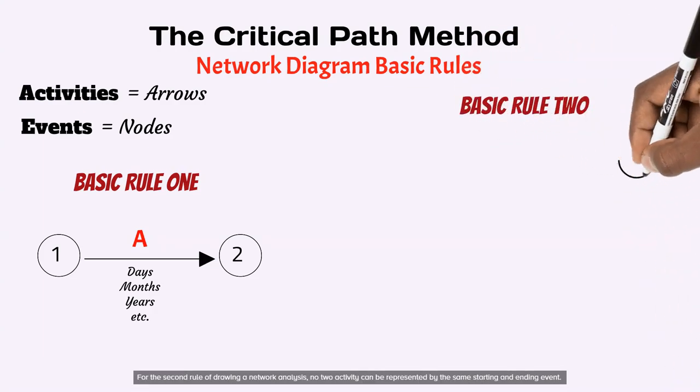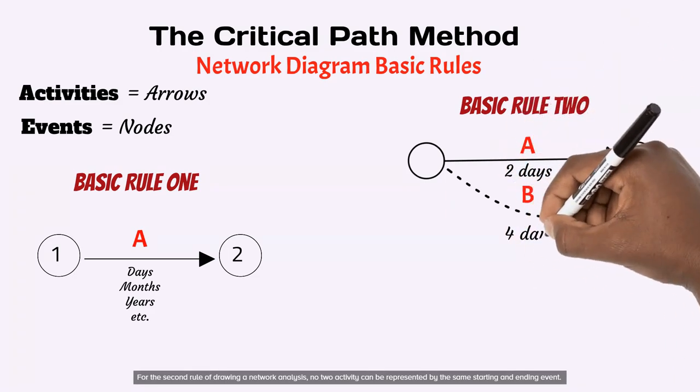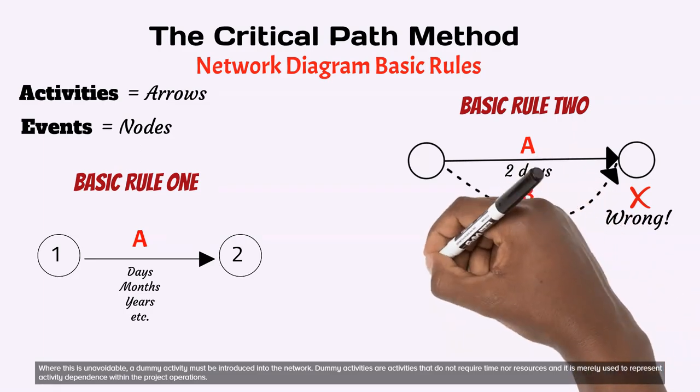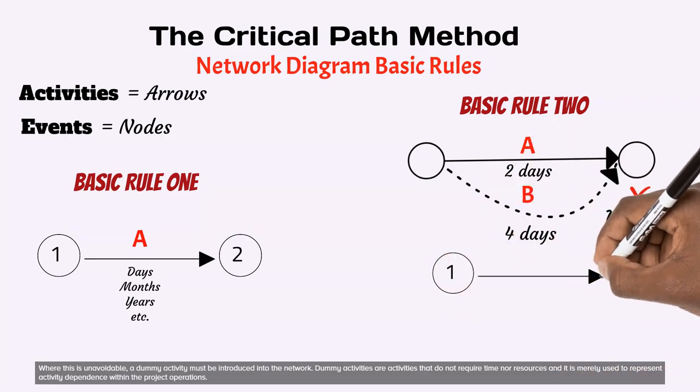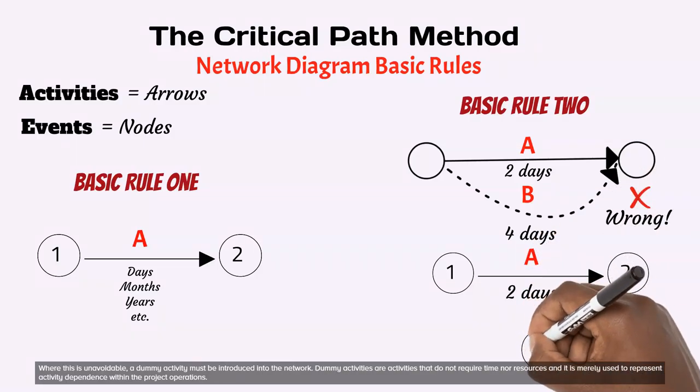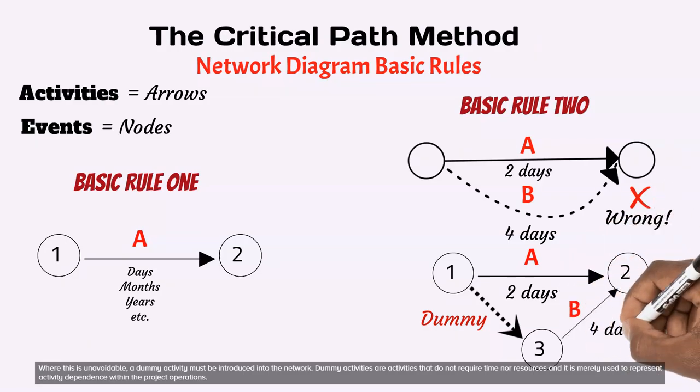For the second rule of drawing a network analysis, no two activities can be represented by the same starting and ending event. Where this is unavoidable, a dummy activity must be introduced into the network. Dummy activities are activities that do not require time nor resources and are merely used to represent activity dependence within the project operations.